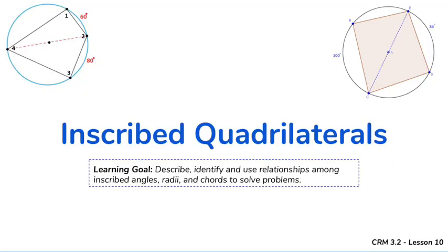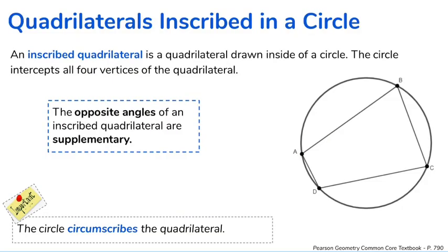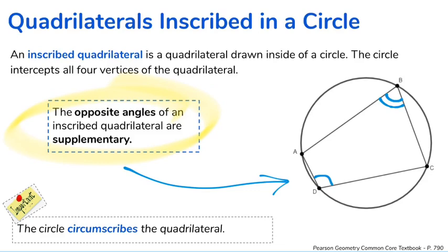This video is going to cover the basic ideas associated with quadrilaterals that are inscribed in circles. With an inscribed quadrilateral, the angles that are opposite one another are always going to be supplementary. This is just a property of quadrilaterals when they are inscribed in a circle — that is always true.